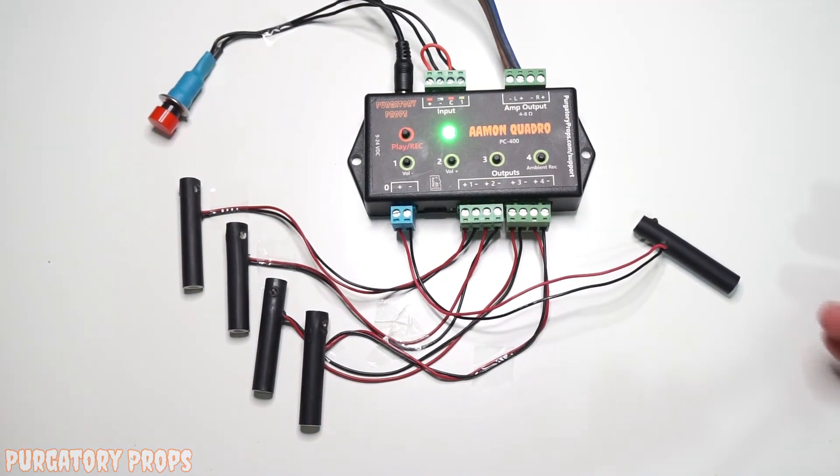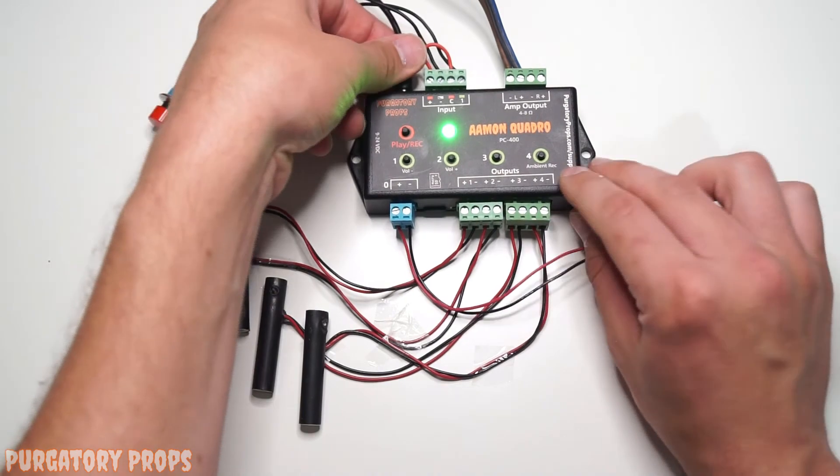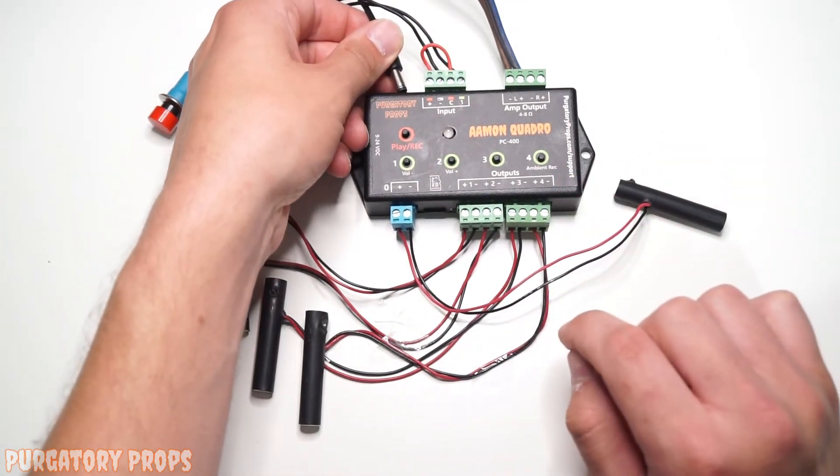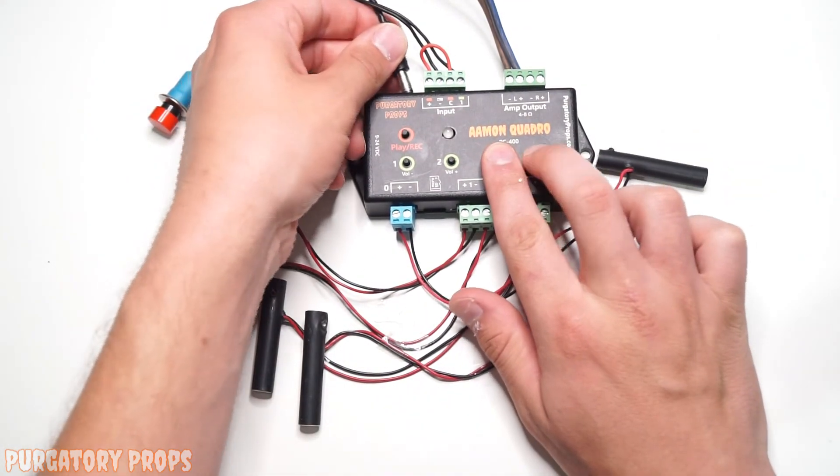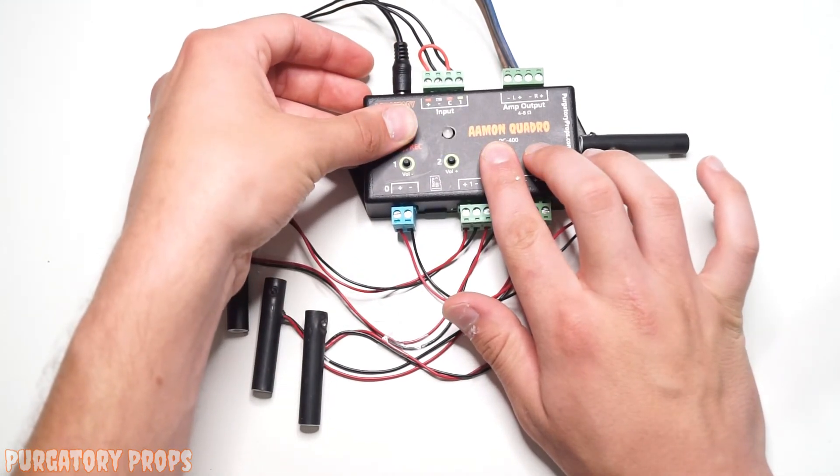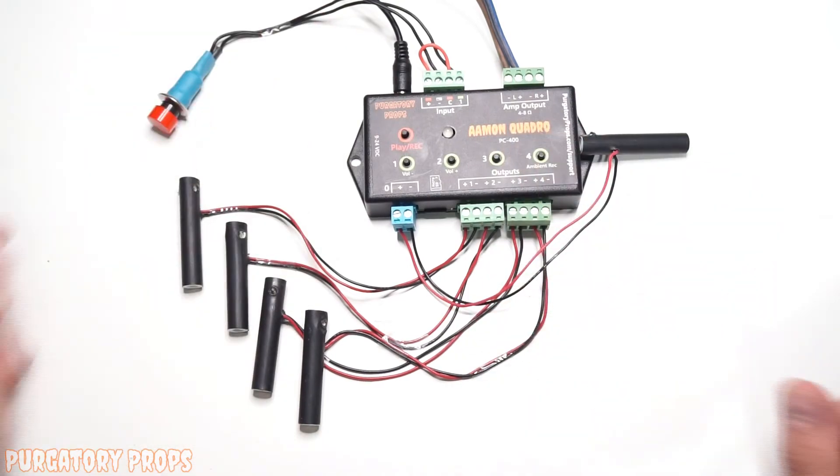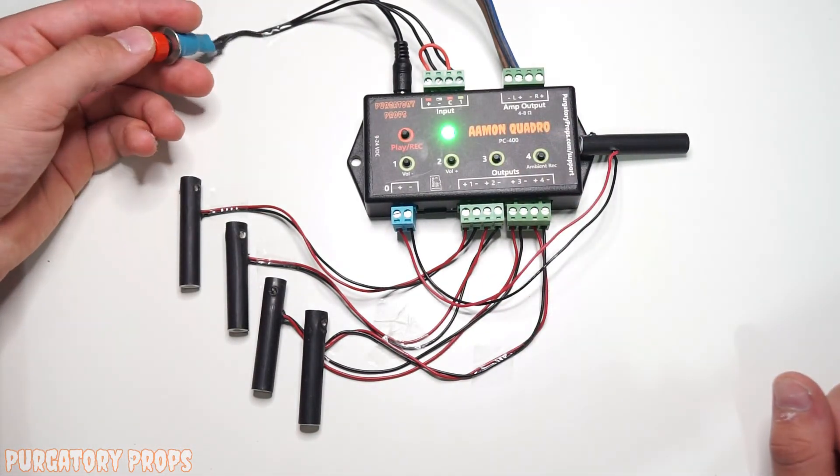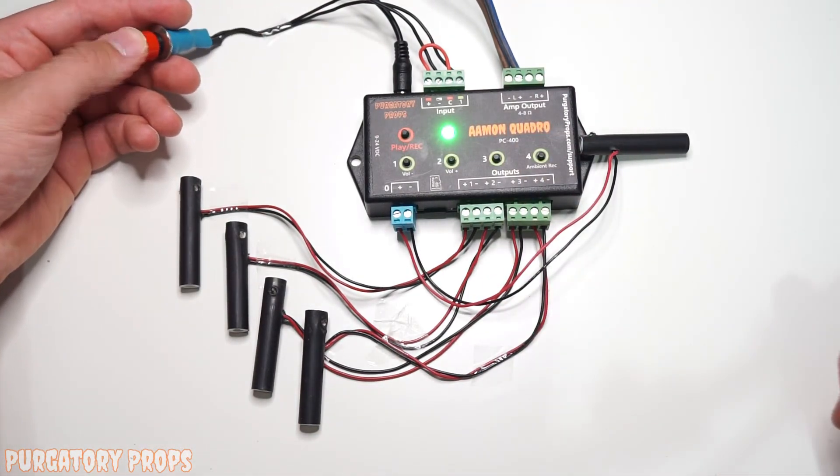If you want to clear the pre and post delays, when you turn on the Amon Quadro, hold buttons 3 and 4 and play record. When the LED turns red, let go. And now whenever we trigger, there will be no pre or post delay.